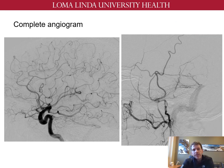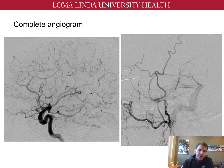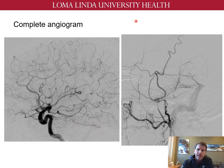The first step in treating any cranial dural AV fistula is a complete cerebral angiogram, including selective intracranial and extracranial injections. Here you can see an ICA injection on the left with a tentorial branch off the cavernous segment that supplies this transverse sigmoid sinus junction fistula, and here's that tentorial artery coming off the ICA. On the right is an ECA injection showing the same fistula fed primarily by a distal branch of the MMA, with early venous drainage into the sigmoid sinus.